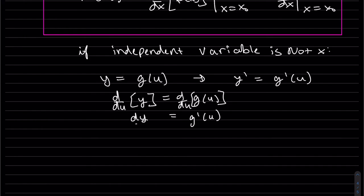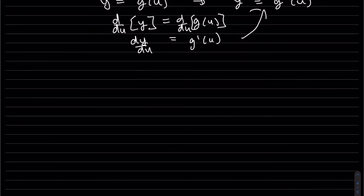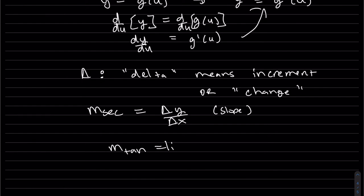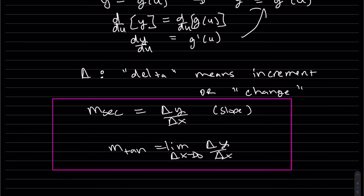If you change the variable — say you have a function in terms of u — then y prime equals g prime of u, and you'd take d/du of both sides. This gives dy/du. The derivative can be in terms of t or any independent variable. One last notation: delta (a little triangle) means increment or change. So m_secant is Δy/Δx, and m_tan is the limit as Δx goes to zero.